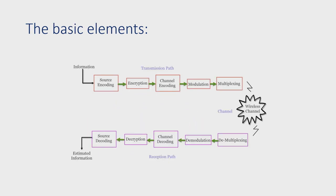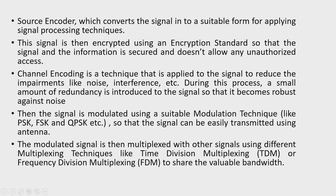The basic elements of the wireless communication system consist of a transmission path, wireless channel, and a reception path. The information is encoded with the help of a source encoder and converted into a suitable form by applying various signal processing techniques. Then, for security purposes, the signal is encrypted using standard encryption algorithms. The signal is further encoded so that the noise interference present in the information can be removed, and certain extra bits are added to the signal to make it robust.